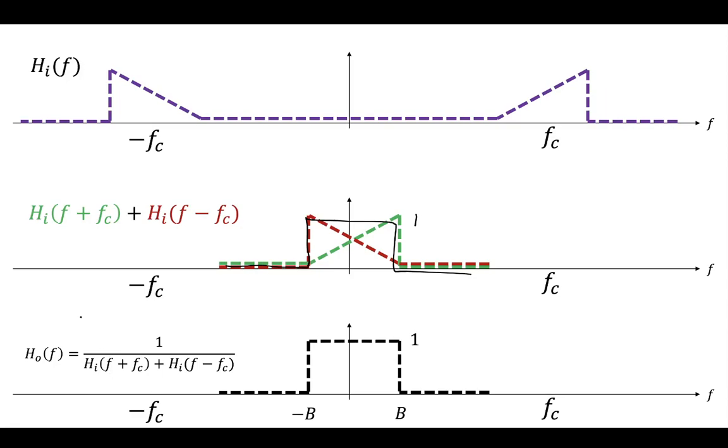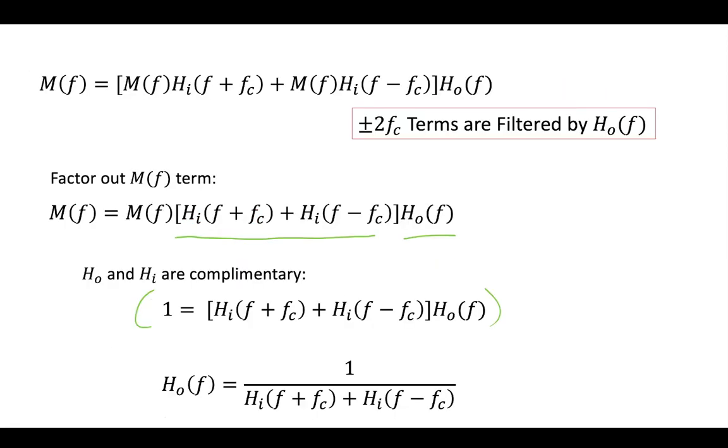So these two filters complement each other so that we can multiply our original message by 1 in that low range where the baseband is so that the original message can be recovered.